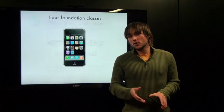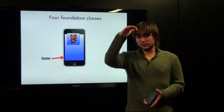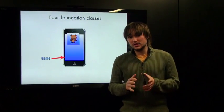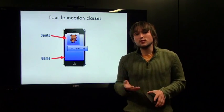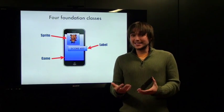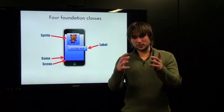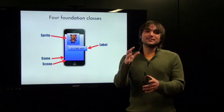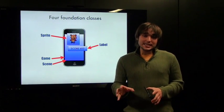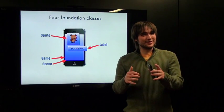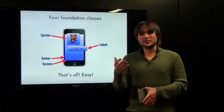Let's talk about the four foundation classes of Enchant.js. At the top level, you have a game object — everything lives in the game object. Inside that is a scene. You can have several scene objects, but usually you're only working with one at a time. And then inside the scene, you have sprites and labels. If you want to represent text in any capacity, you need a label. So it really is a nested system: game object, scene object, and inside the scene you have sprites and labels.